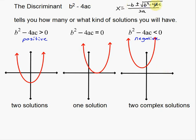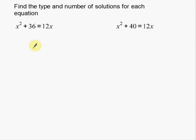This discriminant comes from the quadratic formula — it's just the piece underneath the square root symbol. You can use it to find the type and number of solutions for an equation even before you solve it. You can get an idea whether it's crossing the x-axis once, twice, or not at all. But first, you need to get everything on one side of the equation.